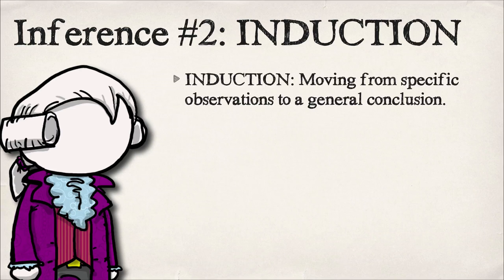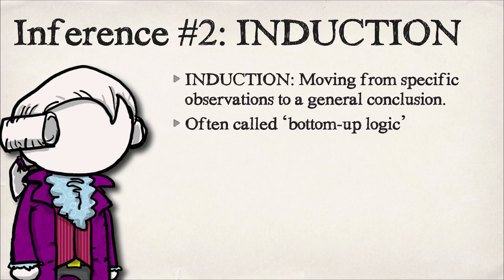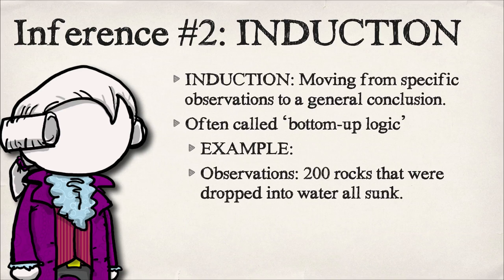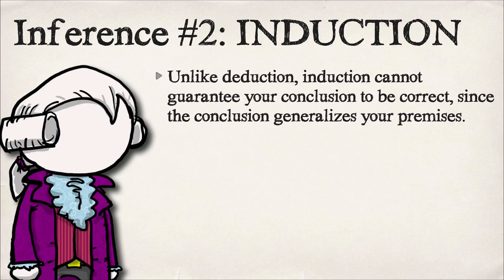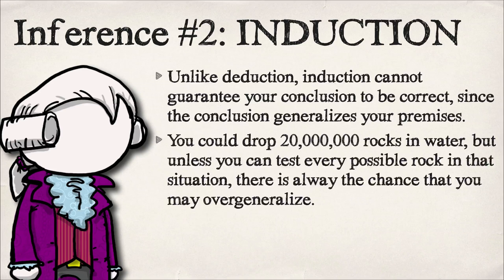The next type of inference is called induction — the idea that you collect a lot of specific observations and then reach a general conclusion. This is often called bottom-up logic. This is really your experience eventually leading to some overarching conclusions. So if you were to drop a bunch of rocks into water and every single one of them sank, you might reach the general conclusion that all rocks sink in water.